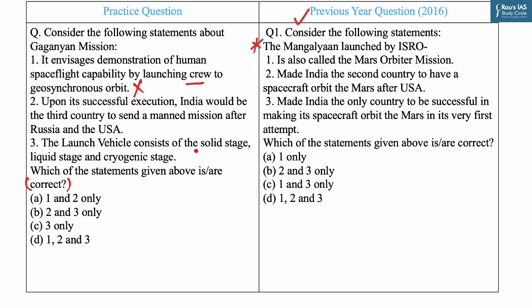Statement one says Gaganyaan envisages demonstration of human space flight capability by launching crew to geosynchronous orbit — this is incorrect. The mission aims to demonstrate India's human spaceflight capability by launching a crew of three members to a low earth orbit of 400 kilometres for three days and bringing them back safely to Earth by landing in Indian seawaters. Statement two says upon successful execution India would be the third country to send a manned mission after Russia and USA — this is also incorrect, as India would be the fourth country after Russia, USA and China.